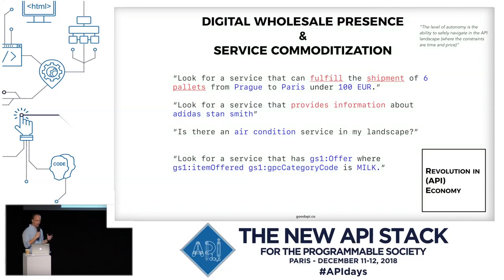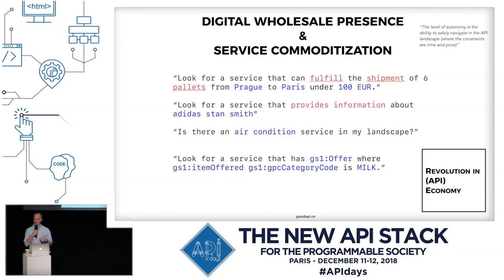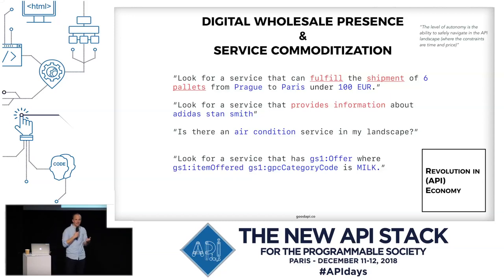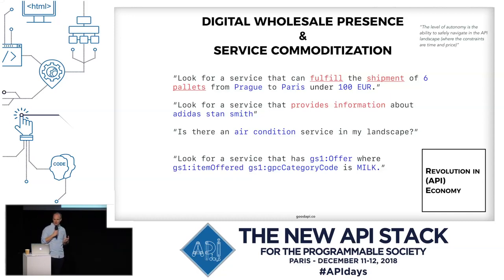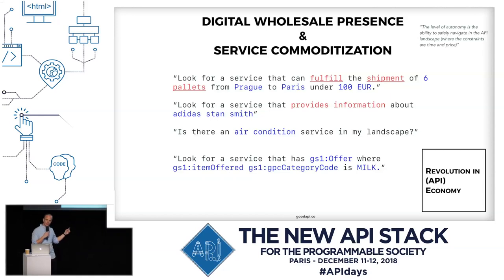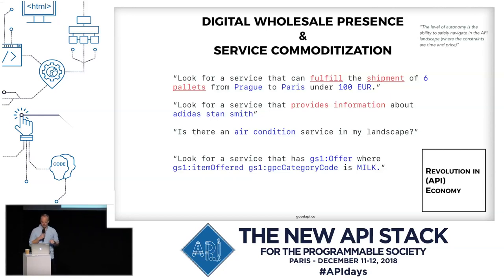It might look like this: as a client, you look at the landscape and ask questions like, 'Can you find me a service that can ship something from Prague to Paris under 100 euros?' Or 'Give me a service that knows something about Adidas products.' Or, for the hotel room app, it will ask, 'Is there AC in my API landscape?' — and if so, display the controllers so you can control the AC in the room. You can also use these queries to find the best price of milk or any other commodity. When machines are able to do these queries — no longer humans searching websites for the cheapest flight — we will see another big turn in the API economy. Thank you.